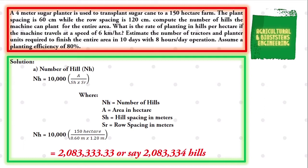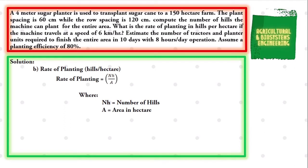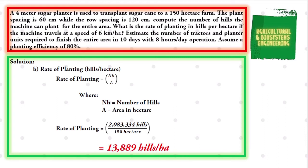The next value we are going to solve is the rate of planting in hills per hectare. The formula is: Rate of Planting = NH / A, where NH is the number of hills and A is the area in hectares. Substituting: Rate of Planting = 2,083,334 hills / 150 hectares. We get a final answer for the rate of planting of 13,889 hills per hectare.